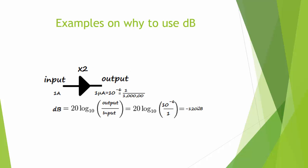In another example, when the input is 1 amp and the output is 1 microamp, the output is 1 over a million. When we calculate this using our formula in dB, it would be 20 log of 1 microamp over 1 amp, which gives us minus 120 dB — much easier to work with than the raw number.